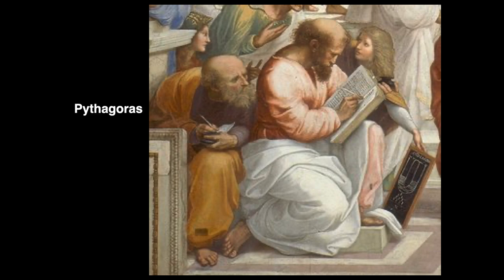Pythagoras on the lower left believed that the world, including the movement of the planets and stars, operated according to mathematical laws. These mathematical laws were related to ideas of musical and cosmic harmony, and thus, for the Christians who interpreted him in the Renaissance, to God. Pythagoras taught that each of the planets produced a note as it moved, based on its distance from the earth. Together, the movement of all the planets formed perfect harmony — the harmony of the spheres.